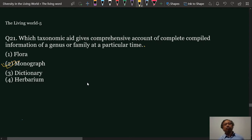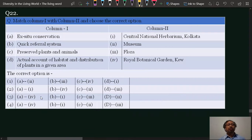Monographs are books or published papers which give detailed description of one genus or family. As it is one, so it is the monograph. Question number 22.